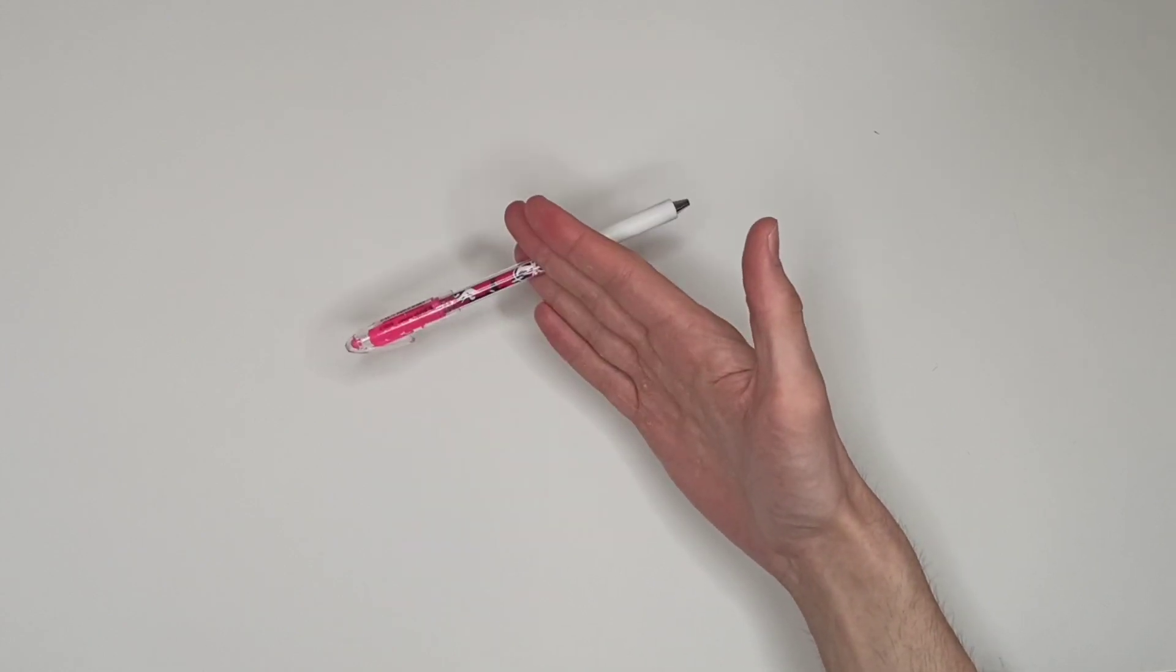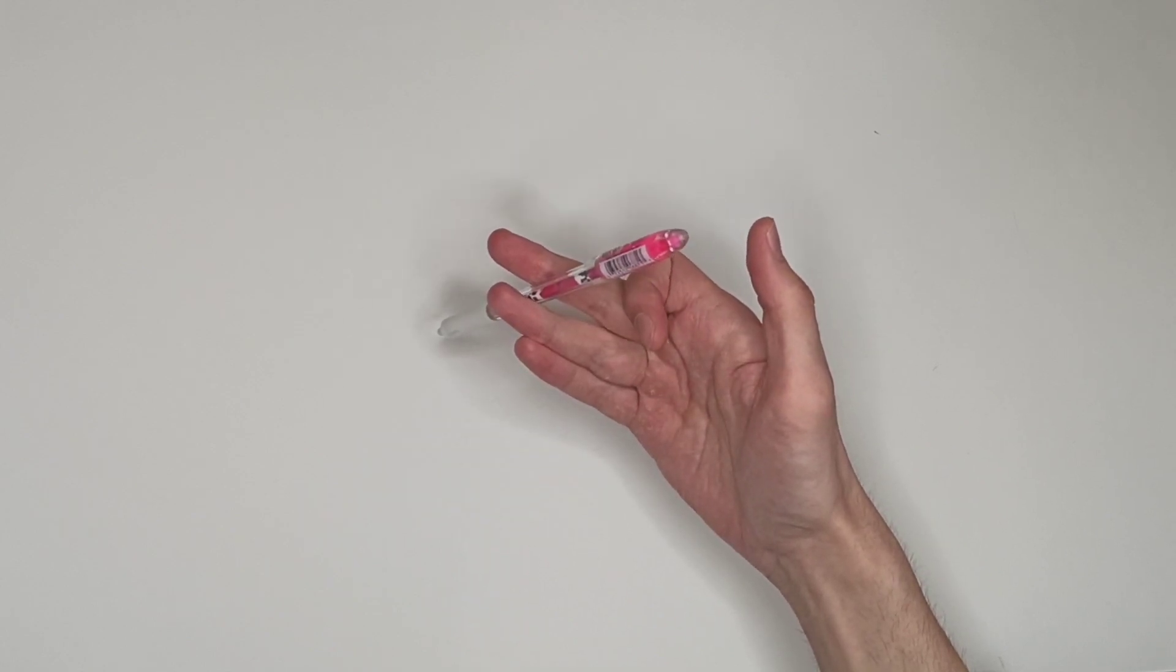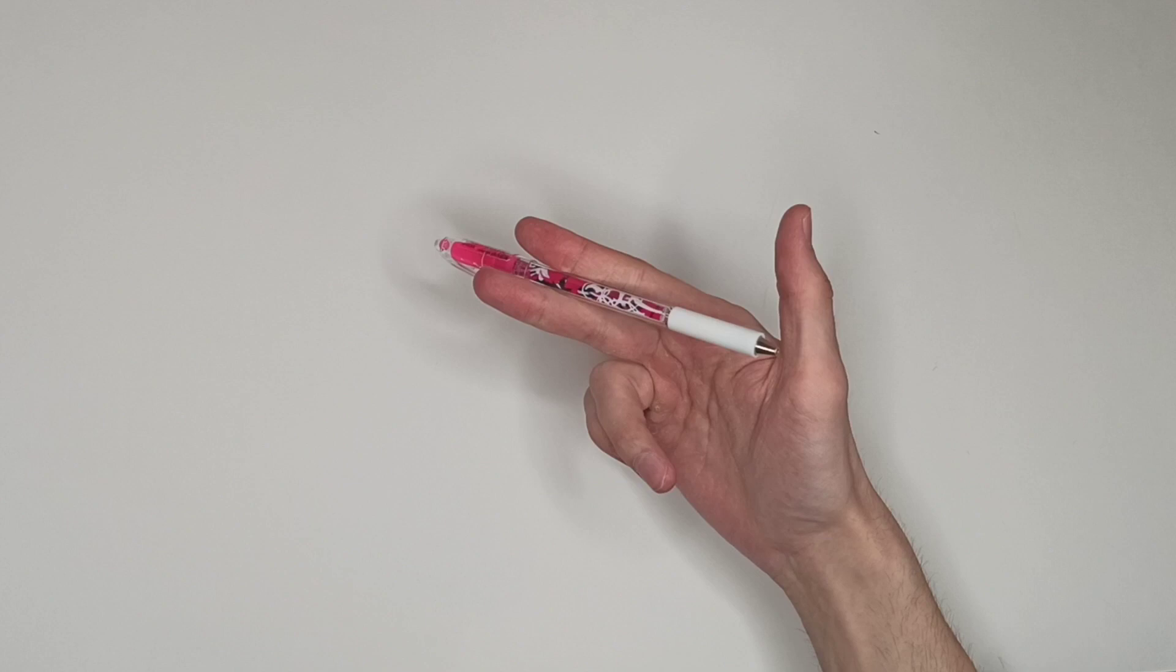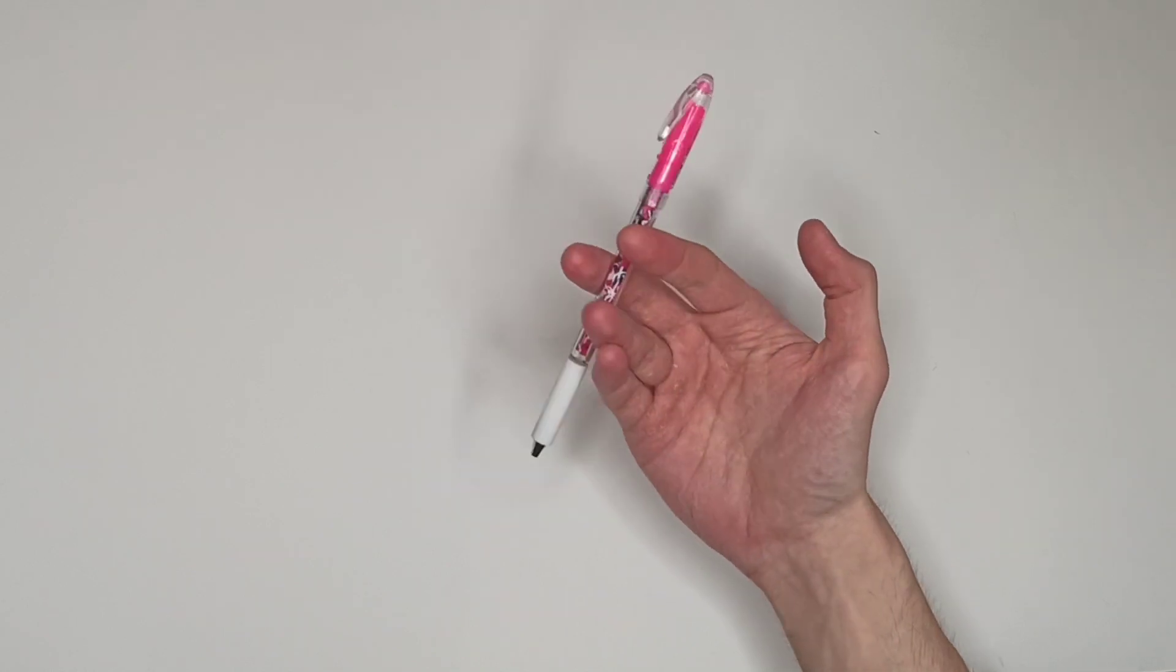Now the third step is the easiest. Just bring your index finger under the pen. Your fingers should look something like this at this point.